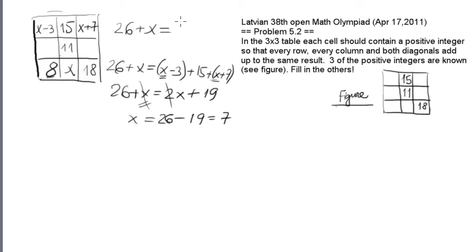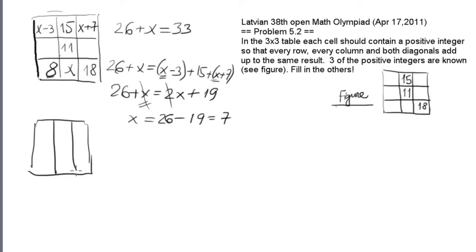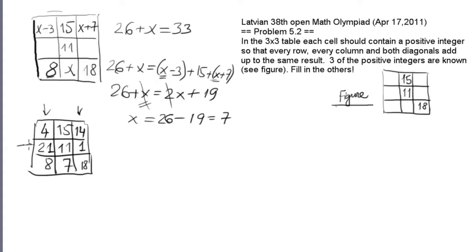This means all my sums should be equal to 33. Let's redraw the magic square: 15, 11, 7, 18, 8, 4, 14, and checking each vertical — 14 plus 18 is 32, plus 1 makes 33. Finally checking the remaining sums, they are all equal.